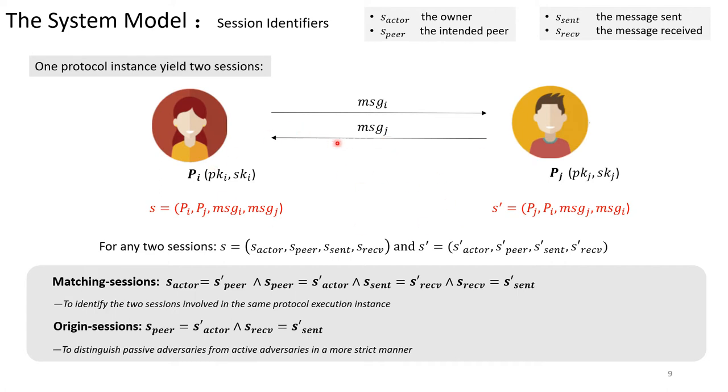For example, in such an instance, the session on Pi is identified as Pi, Pj, MSGi, MSGj. While the session on Pj is identified as Pj, Pi, MSGj and MSGi. Accordingly, two notions were also defined here for any two sessions S and S prime. If the owners are the peers of each other and the messages they received are the messages sent by the other, they are called matching sessions of each other. This notion is used to identify two sessions involved in the same protocol execution instance.